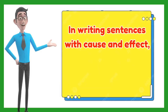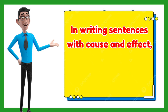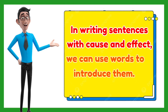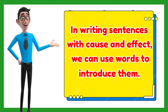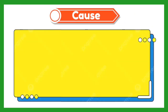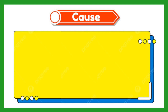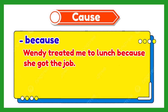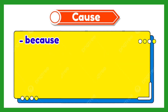In writing sentences showing a cause-effect relationship, we can use words that introduce the cause and the effect. Let us first have the words we can use to show cause. One of them is 'because,' just like our previous example — the word 'because' introduces the cause. We can also use 'since,' 'due to,' and 'for.'